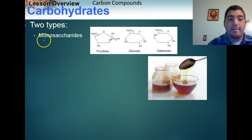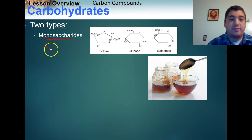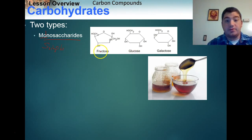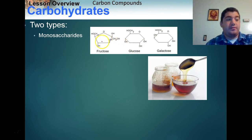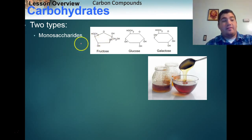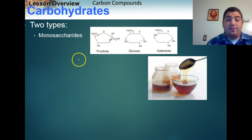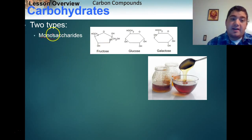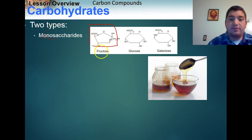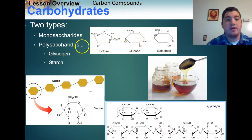The prefix 'mono' means one, and monosaccharides refer to simple sugars — things like glucose, fructose, and galactose. These are your healthy sugars found in lots of fruits and vegetables like grapes. They are a very good source of energy. They're called monosaccharides because they usually consist of only one ring — fructose has one ring, glucose has one ring, galactose has one ring.